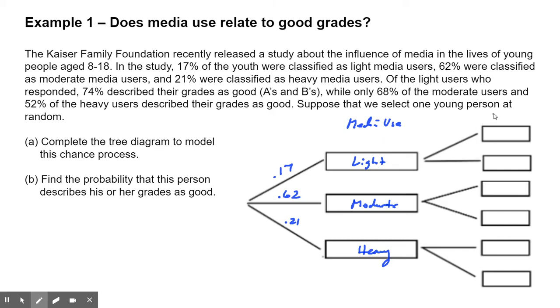And now the second event is your grades. And again, you either classify your grades as good, and then we'll just say bad. You could also say not good. Good, bad. And again, notice I do it three times because there are three branches in the first stage. So for light users, this is a conditional probability. Of light users, 74% responded as good grades. So 0.74. So then how many would be bad? Well, that'd be one minus 0.74. That'd be 0.26. Again, these two must add up to one. 68% of moderate users said their grades were good. So 0.68. So again, one minus 0.68 is 0.32. And then 52% of heavy users said they're good. So 0.52 and 0.48.